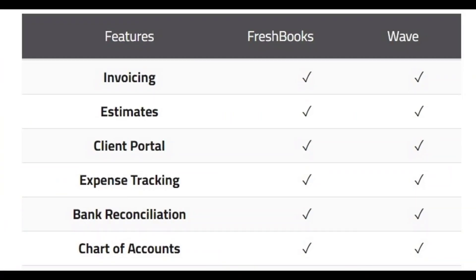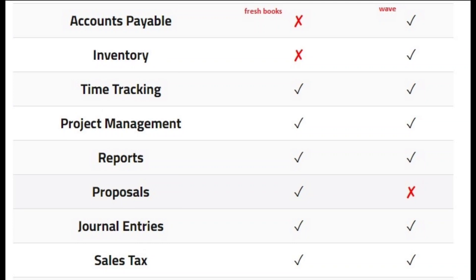Here is a feature comparison: invoicing, estimates, client portal, expense tracking, bank reconciliation, and chart of accounts are all features available in both FreshBooks and Wave. Accounts payable and inventory features are not available in FreshBooks but are available in Wave. Time tracking, project management, and reports are available in both softwares. Proposals are available in FreshBooks but not in Wave. General journal entries and sales tax — both these features are available in both accounting softwares.